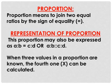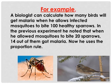Proportion joins two equal ratios by a sign of equality. We represent proportion as: a:b = c:d. In a proportion, when three values are known, the fourth one can be easily calculated.